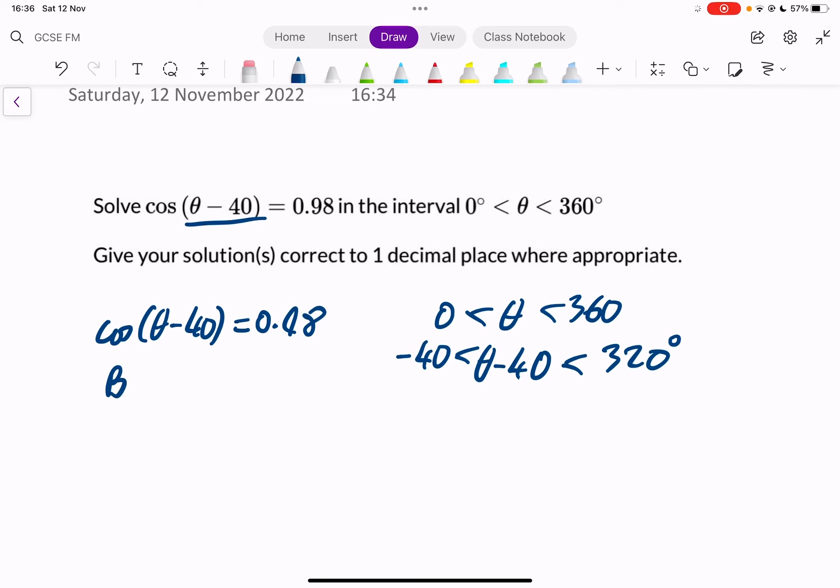Next thing we're going to do is our basic angle. To get your basic angle, how you get it is cos inverse of 0.98. Now even if this bit here had been minus 0.98, you would still be doing cos inverse of 0.98. The minus will come in later when we look at our CAST diagram.